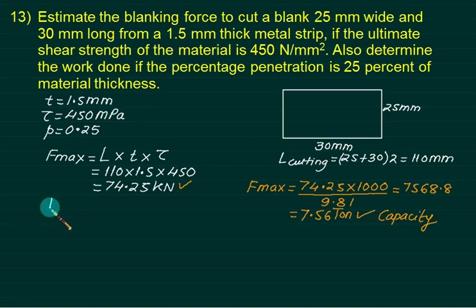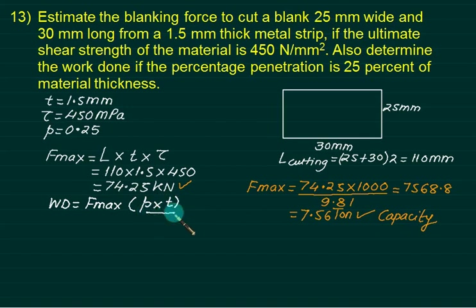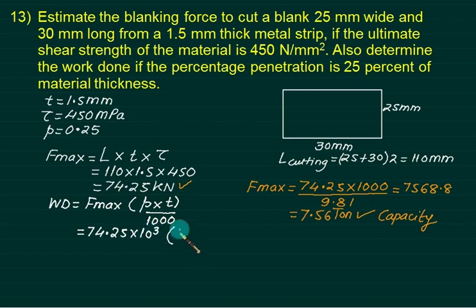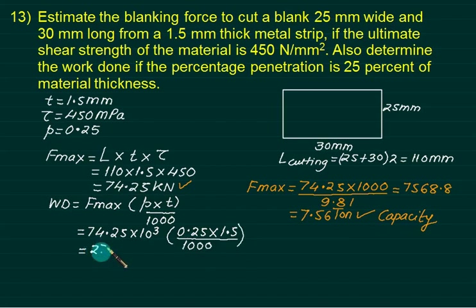For the same blank, work done = F_max × p × t = 74,250 × 0.25 × (1.5/1000) = 27.84 N·m (joules). The penetration percentage is 25%, so p = 0.25.